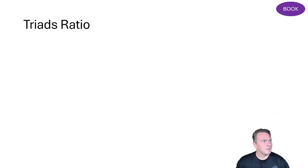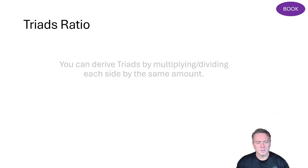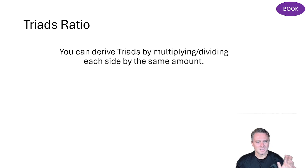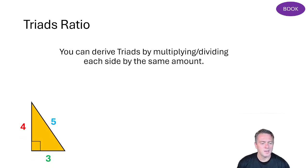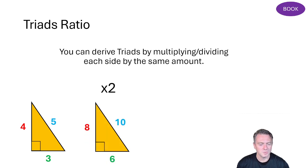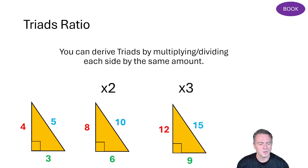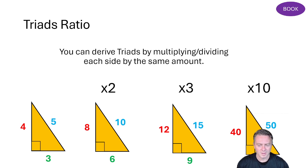Triads work in ratios. As long as you're consistent — dividing and multiplying each side by the same amount — you can use one of the original triads to derive a new one. For example, 3-4-5: if we multiply everything by two, we get the new triad 6-8-10. Similarly, times the original 3-4-5 by three, we get 9-12-15, where the hypotenuse is 15 balanced with 12 and 9. Times it all by 10, you get 30-40-50.